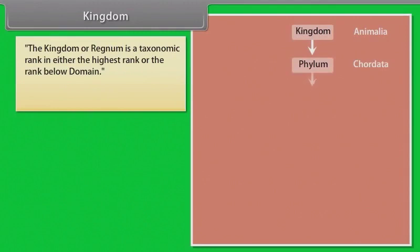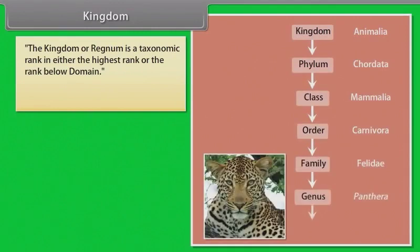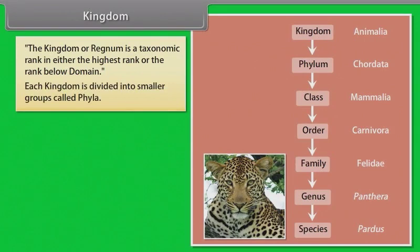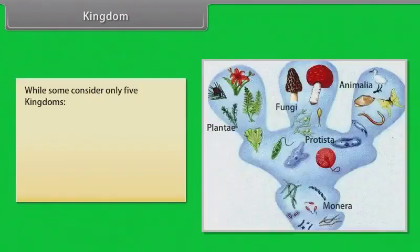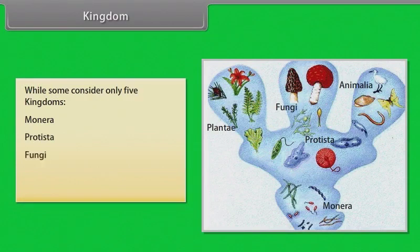The kingdom, or regnum, is a taxonomic rank that is either the highest rank or the rank below domain. Each kingdom is divided into smaller groups called phyla. A system of six kingdoms includes Animalia, Plantae, Fungi, Protista, Archaea, and Bacteria, while some consider only five kingdoms: Monera, Protista, Fungi, Plantae, and Animalia.